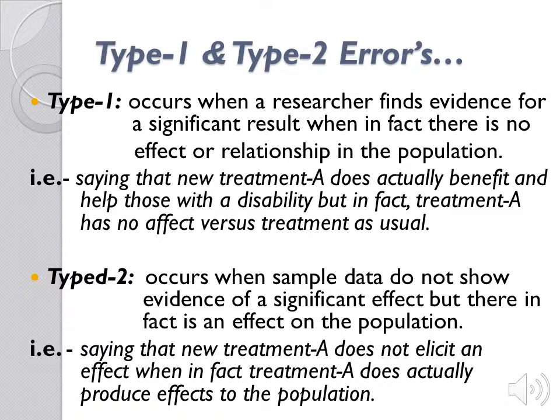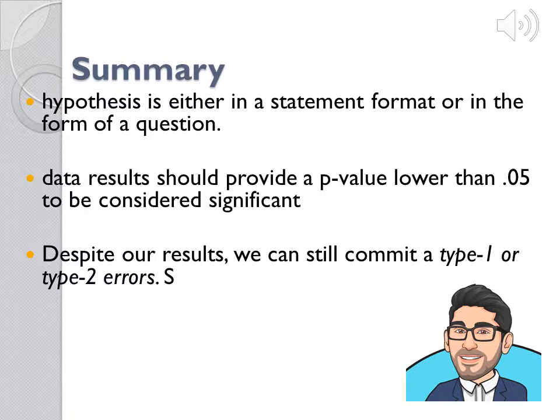This is where things get a little tricky. Since a hypothesis is an inferential process using limited information to reach a general conclusion about your population in question, there is always a possibility that a researcher may be committing a type 1 or type 2 error. A type 1 error occurs when a researcher finds evidence for a significant result when in fact there is no significant effect — for example, saying that treatment A does actually benefit those with a disability, but in fact treatment A has no effect versus treatment as usual. A type 2 error occurs when sample data do not show evidence of a significant effect, but there in fact is a significant effect on the population — for example, saying the new treatment A does not elicit an effect when in fact treatment A does actually produce effects to the population.